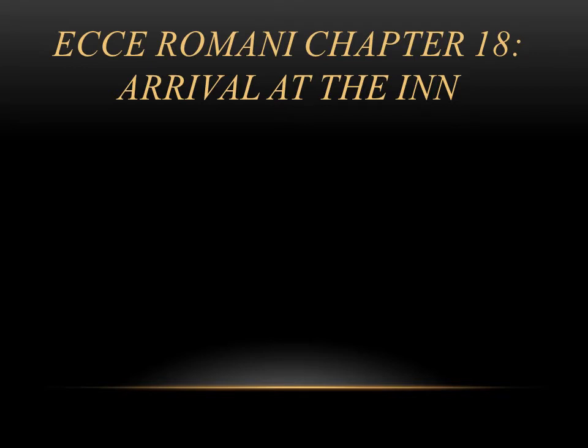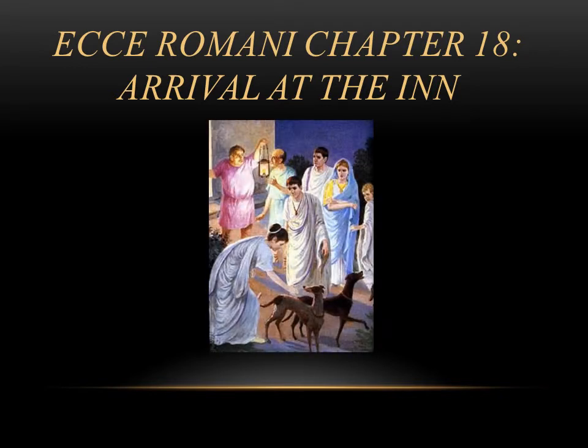Hey guys, in this video we're going to be looking at Chapter 18 of the Ecce textbook titled Arrival at the End. In this chapter we're going to be following the Roman family as they finally make it to the end and get ready to spend the night. The grammar for this chapter is coming back to adjectives. We've already seen what we called first and second declension adjectives and all of their endings, and we're going to finish that discussion by looking at the last group, which we call third declension adjectives.